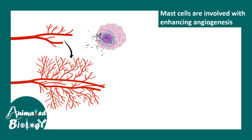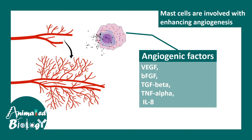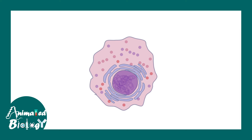Other than these functions, mast cells are involved in enhanced angiogenesis — that is, the creation of new blood vessels. Mast cells secrete a range of angiogenic factors such as VEGF, beta-FGF, TGF-beta, TNF-alpha, and interleukin-8, all of which promote angiogenesis.